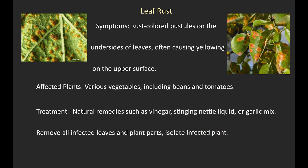6. Rust. Symptoms: rust-colored pustules on the undersides of leaves, often causing yellowing on the upper surface. Affected plants: various vegetables, including beans and tomatoes. Treatment: natural remedies such as vinegar, stinging nettle liquid, or garlic mix. Remove all infected leaves and plant parts and isolate the infected plant.